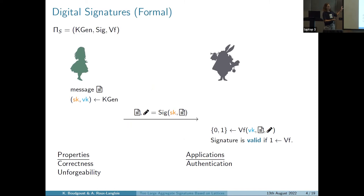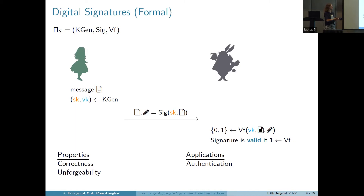Alice generates a pair of keys — a signing key that is secret and a verification key that is public. She signs a message using the signature algorithm and sends it to the rabbit, who uses the verification algorithm together with the public key. If the signature was valid, this algorithm outputs one. There are two properties we want: correctness — whenever Alice signs a message the verification should always output one — and unforgeability — it should not be possible for any other person than Alice to sign a message on her behalf.